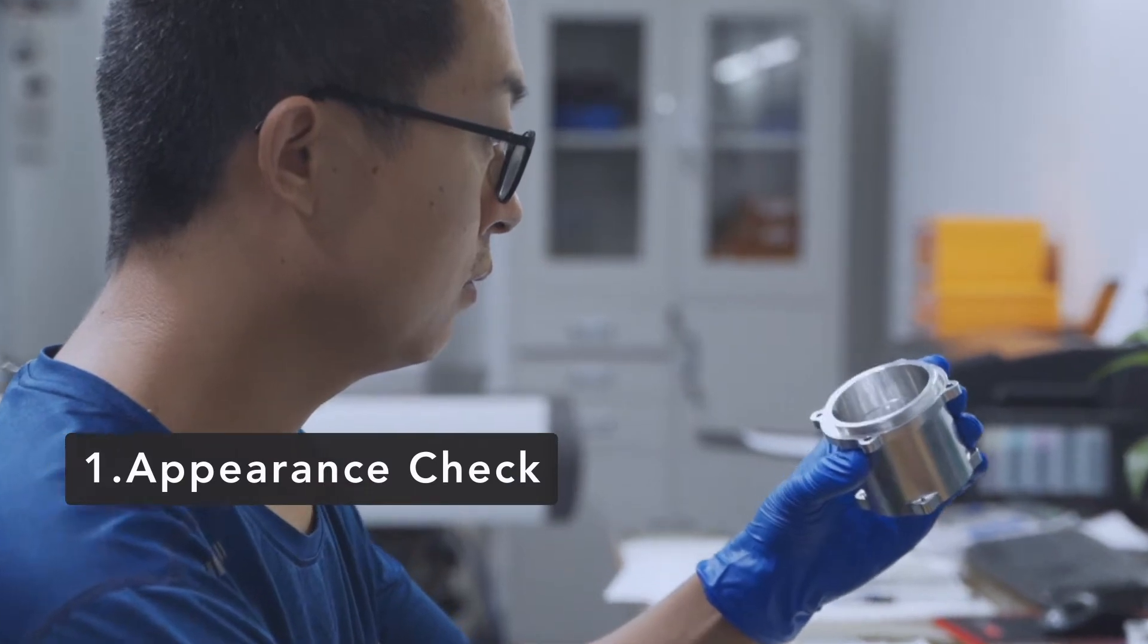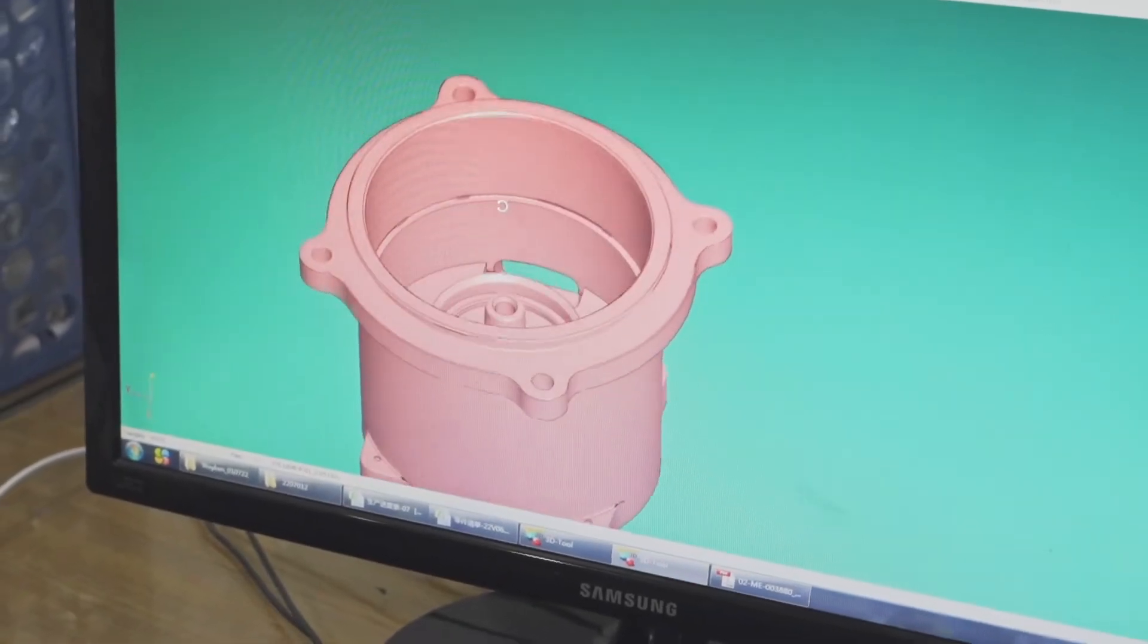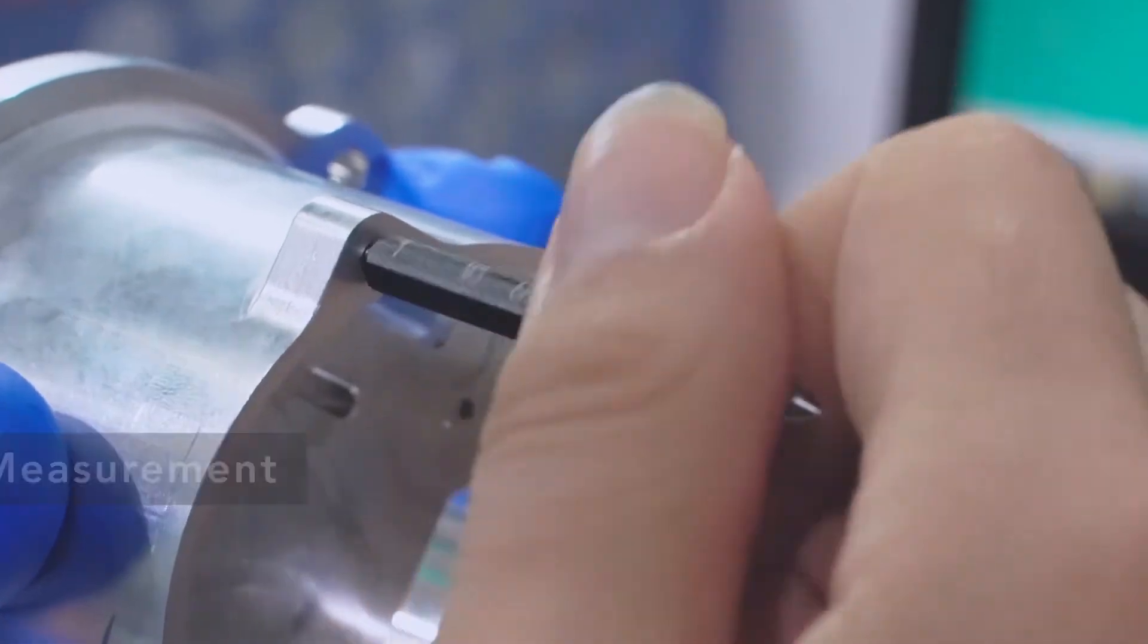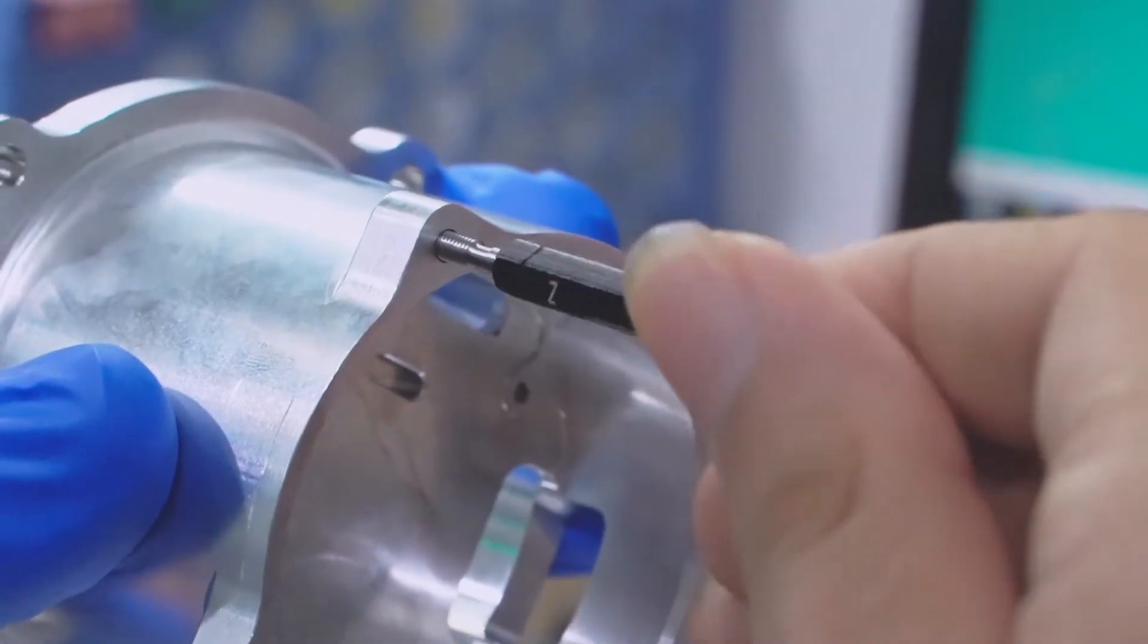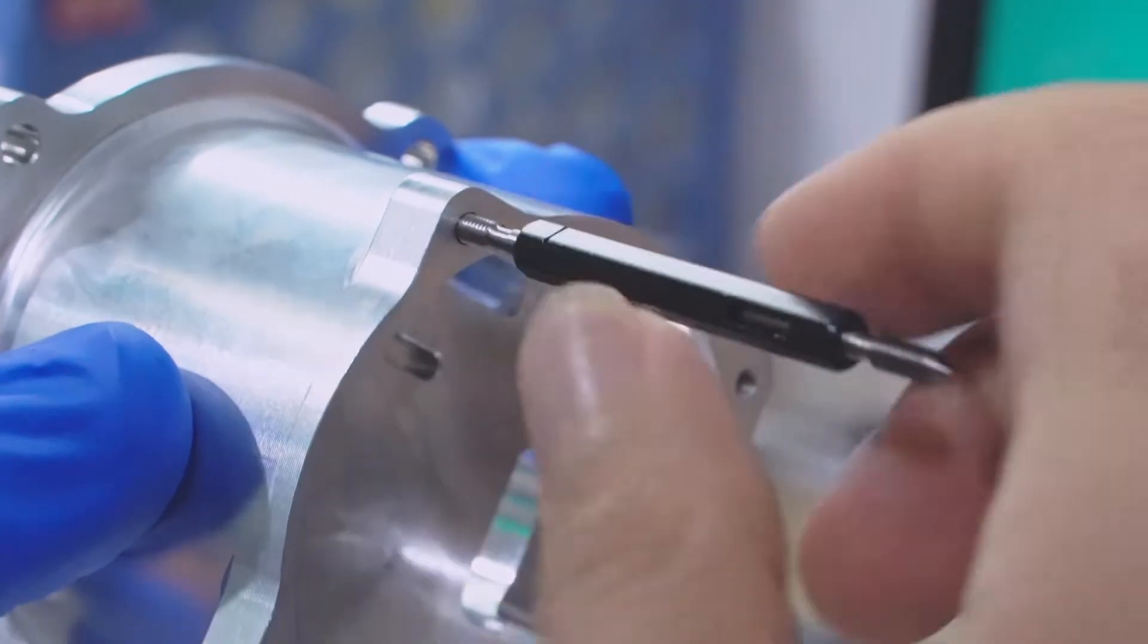The first step is appearance check by visual. The second step is to use M36H thread gauge to measure the accuracy of threadings.